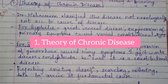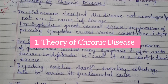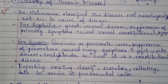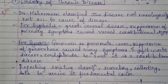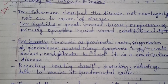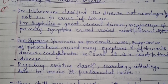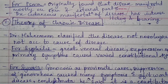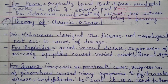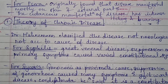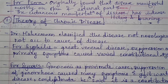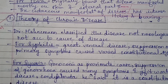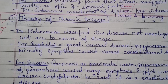First is the theory of chronic disease. Dr. Hahnemann classified diseases not nosologically, not according to the cause of disease. Here, we have to mention all three miasms. For Psora, he originally found that disease manifested mostly on skin and external parts. The cutaneous manifestation of disease has intense itching and burning.